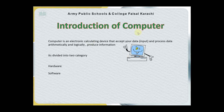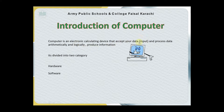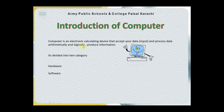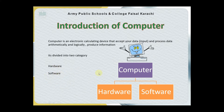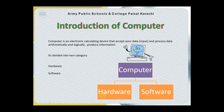Introduction of computer. A computer is an electronic calculating device that accepts data in the form of input, processes data automatically and logically, and produces information in the form of output. It is divided into two categories: hardware and software. As you can see in the picture, a computer has two categories — hardware and software — and it is a combination of both.